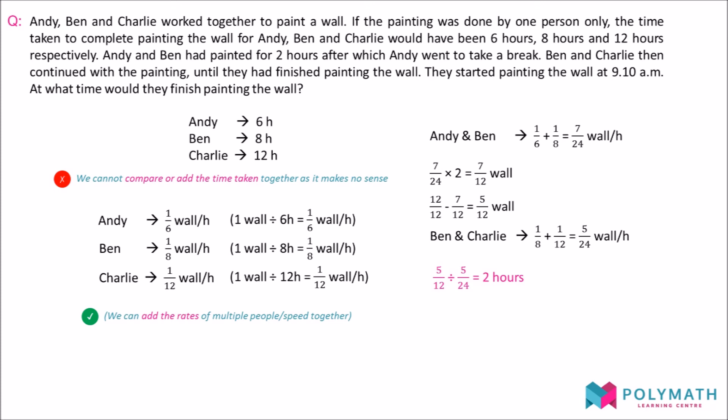Since the question told us that Andy and Ben have painted for 2 hours, and we now know that Ben and Charlie would take another 2 hours to finish painting the wall, the total time taken for the 3 people to paint the wall would be 2 plus 2, 4 hours. We add 4 hours to their starting time of 9:10 am to get an answer of 1:10 pm.